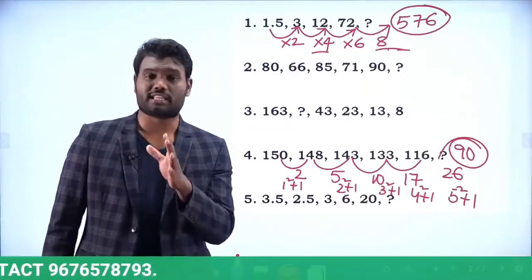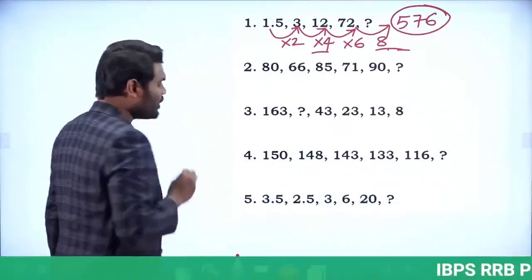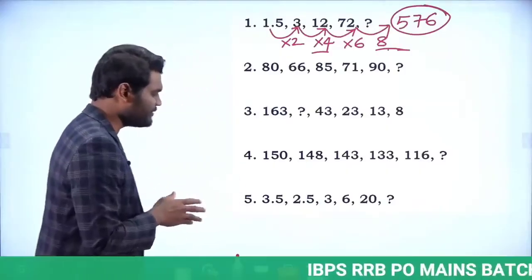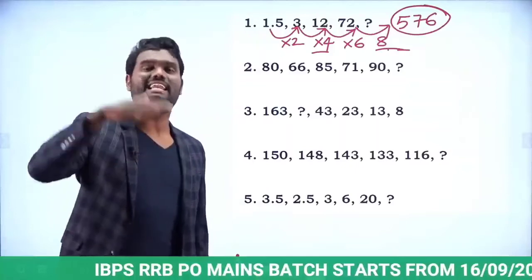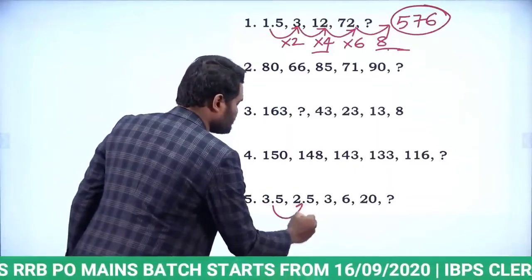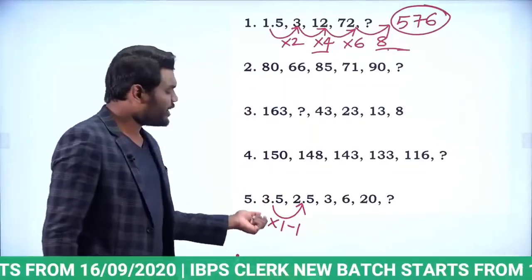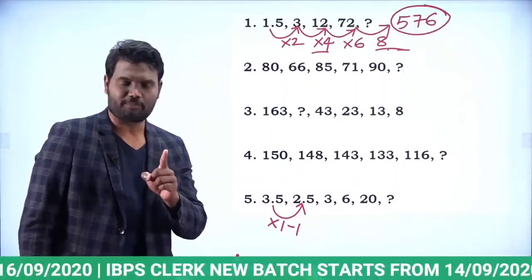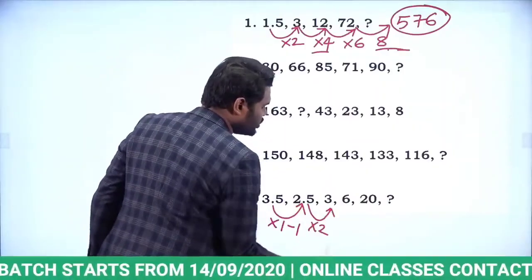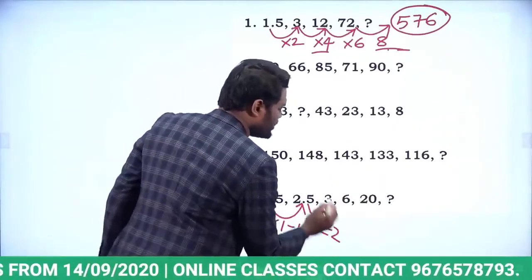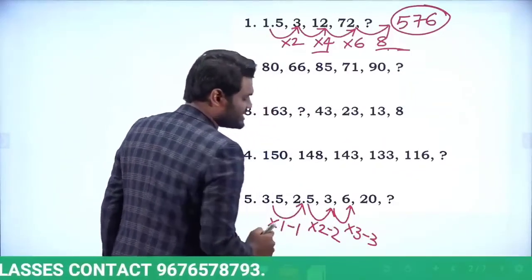These are exact questions from the first shift. The next question is: 3.5, 2.5, 3, 6, 20, question mark. The series is gradually increasing. The pattern is: 3.5 × 1 − 1 = 2.5, then 2.5 × 2 − 2 = 3.